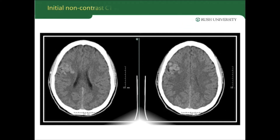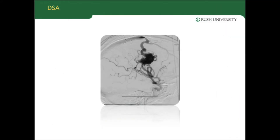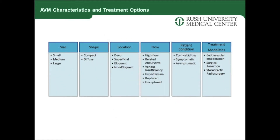The treatment of AVMs today is quite a challenging decision, perhaps one of the most challenging decisions we have to make in cerebrovascular surgery. Taking into consideration the CT scan, MRI, and cerebral angiography — six vessels — cerebral angiography is extremely important so that one can evaluate the size of the arteriovenous malformation, the shape, location, the type of flow into the lesion, and certainly clinical information such as patient condition. That allows us to look into all the possibilities.